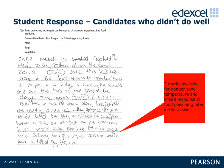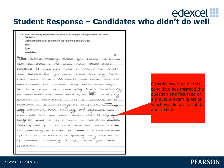Two marks were awarded for danger zone temperature and a linked response to food poisoning later in the answer. The question this year was split into three areas for six marks. Weaker candidates generally focused on colour change with little discussion about the effects. Texture, flavour, aroma and colour changes with specific links to coagulation, dextrinisation, temperature ranges for food safety, caramelisation and loss of vitamins B and C in vegetables provided A and A* candidates a real opportunity to demonstrate their excellent food science knowledge.